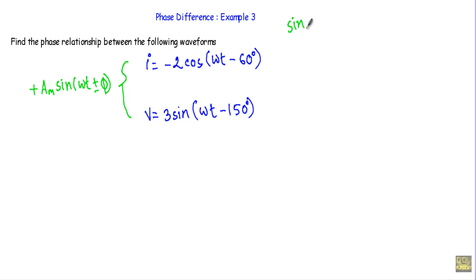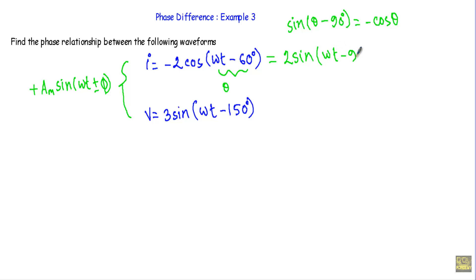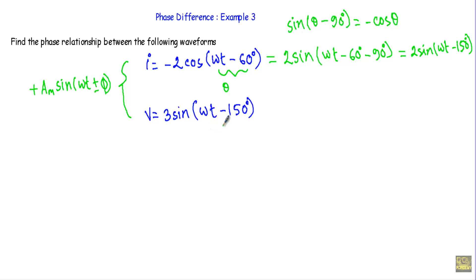We know that sin(θ - 90°) is equal to minus cos(θ). Therefore, if I consider (ωt - 60°) as θ, I can rewrite the current equation as 2 sin(ωt - 150°). This equation and the original expression for I are equivalent, so I can write I equal to 2 sin(ωt - 150°).